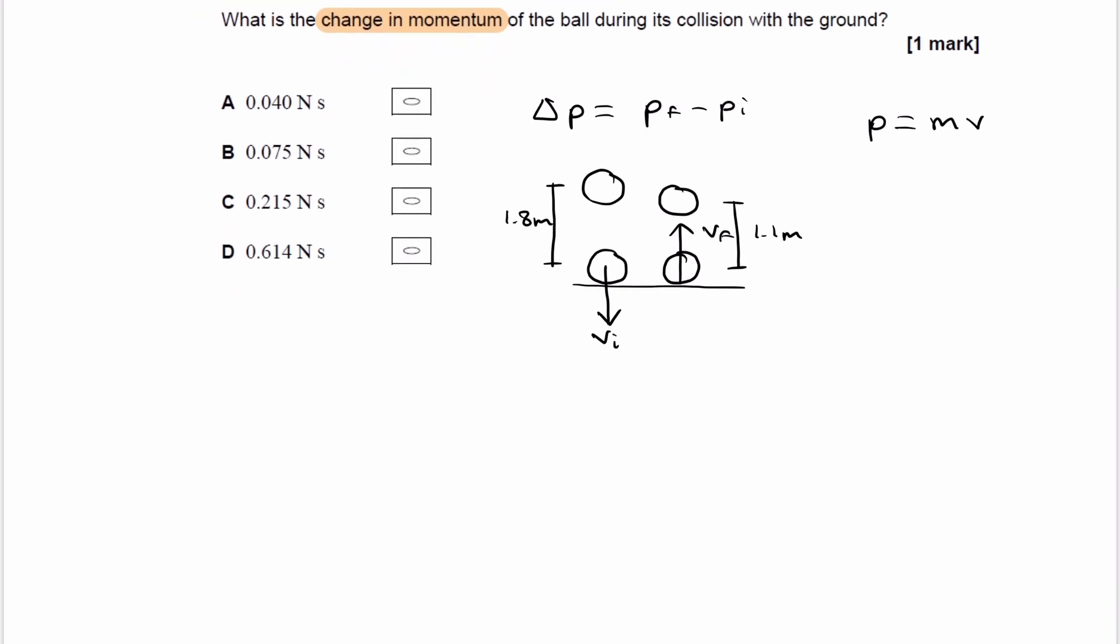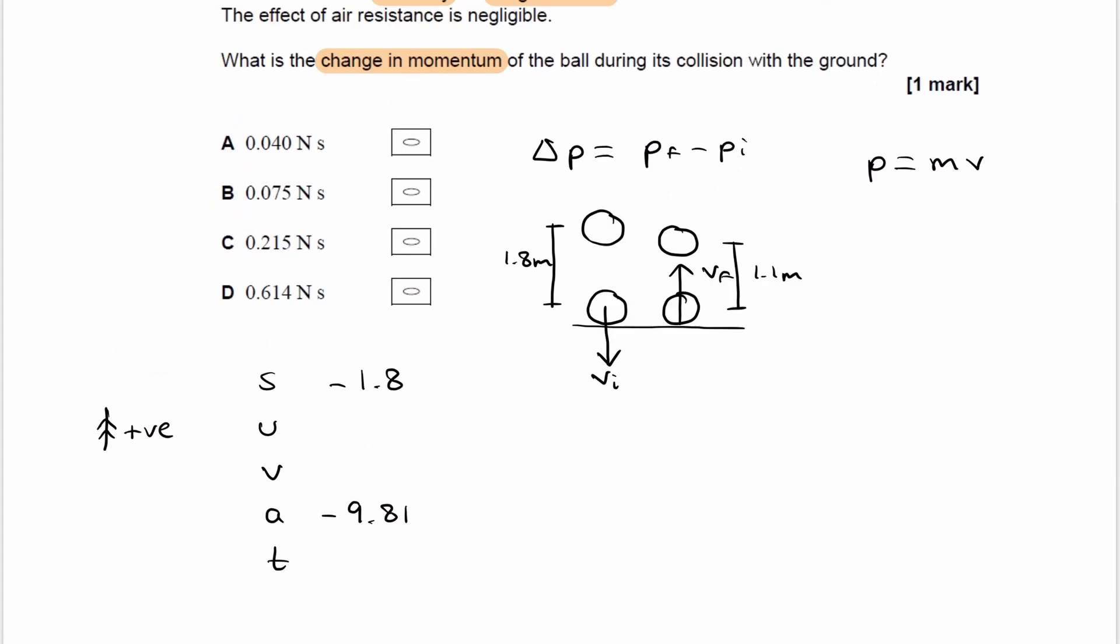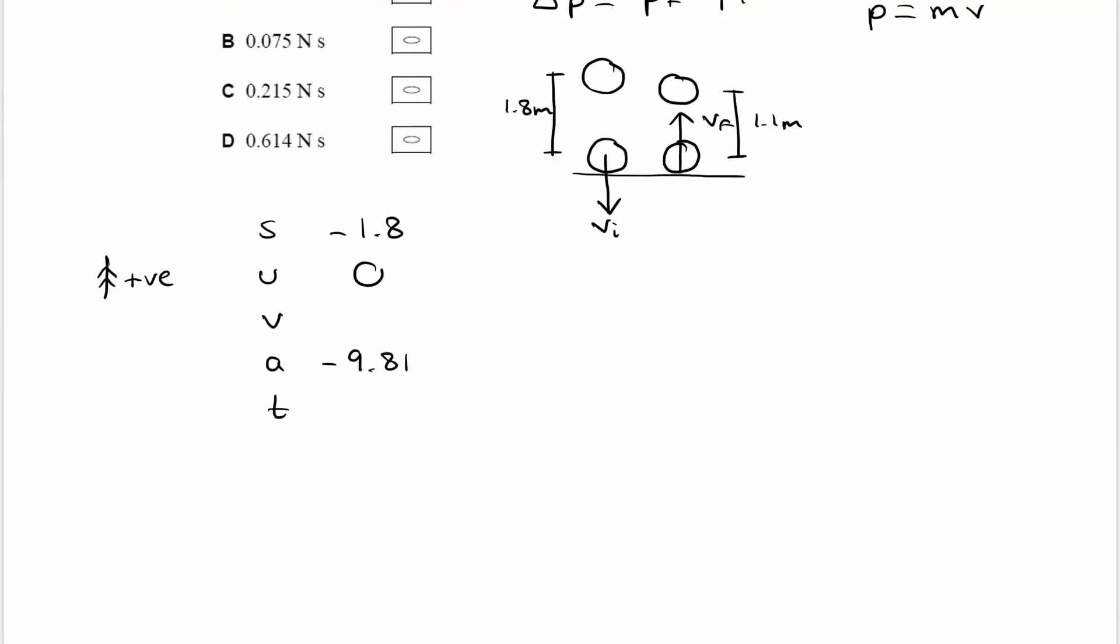Let's define a positive direction. I'm just going to say that upwards is positive and I'm going to stick with that for the rest of the question. So let's look at the fall of the ball and then try and work out what vi is. We know that the displacement is minus 1.8. The acceleration is minus 9.81. Both of those things point downwards and therefore they will be negative. It says in the question that it's dropped from rest, so the initial speed is zero. The final speed is what we're trying to work out. So we can use v squared is u squared plus 2as. u is zero.